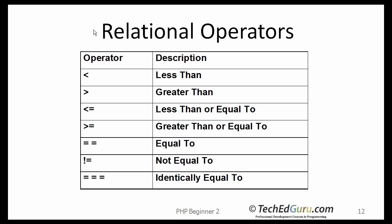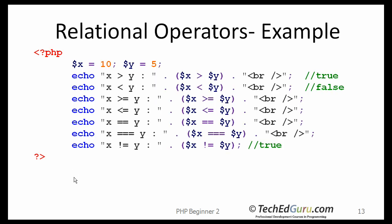Below is the list of relational operators: less than, greater than, less than or equals, greater than or equals, not equals, equal to, and identically equal to. This is how you could use them in expressions. I have two variables declared here — X and Y. X is 10, Y is 5. Then my question here is, is X greater than Y? The answer to that should be true. Is X less than Y? That is false. And you may want to find out what the answer to the remaining questions would be.